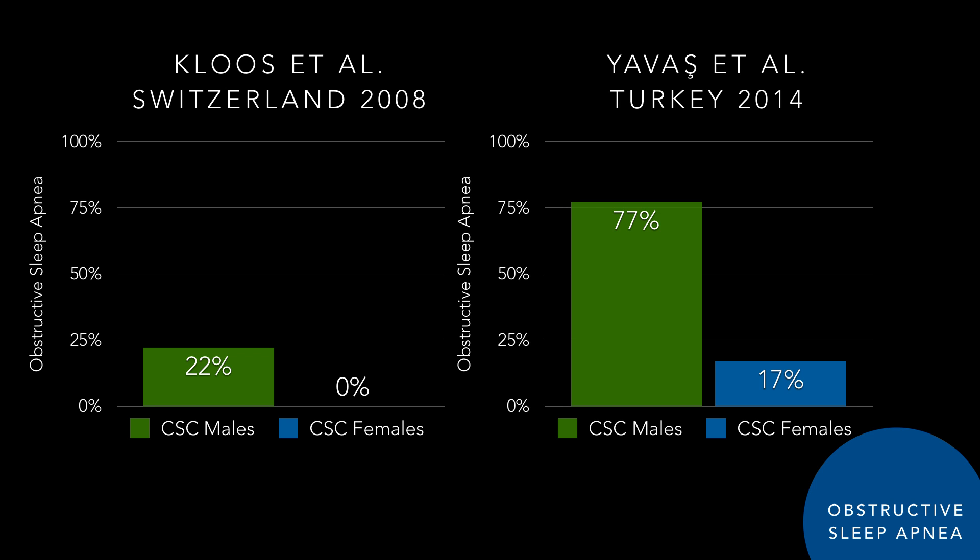In Turkey in 2014, all patients — 17 men and 6 women with central serous — had sleep studies performed, and 77% of the males had sleep apnea, while 17% of the females did. You can broadly take away from these two studies that there is a higher prevalence of obstructive sleep apnea in CSC males rather than CSC females.